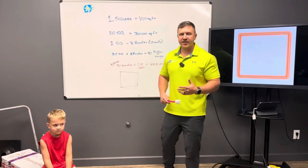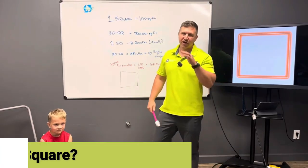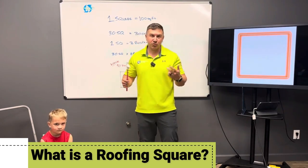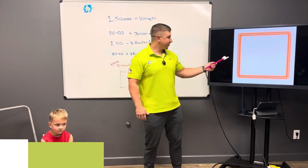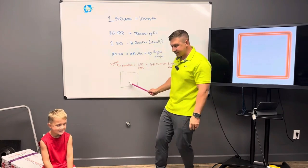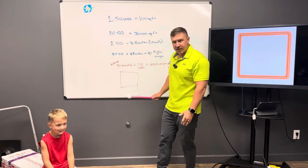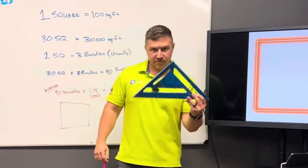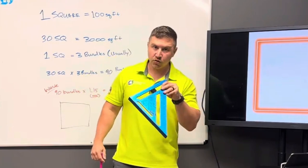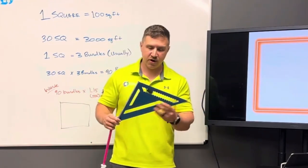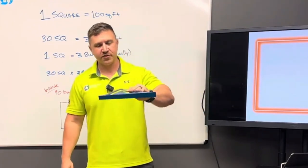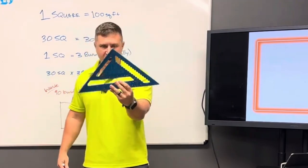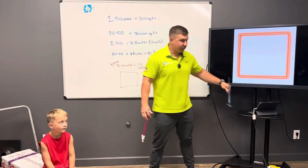So obviously in today's video, we are talking about squares. Most people, when they think of the word square, they think of the shape or something like what Oliver did. But if you're a carpenter, you may think of a square as a tool. This is actually a carpenter square — framers and carpenters use these. It's the name of a tool, even though it's a triangle.